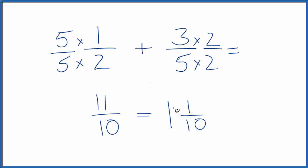So in answer to our question, 1 half plus 3 fifths is 11 tenths, or you could call it 1 and 1 tenth.